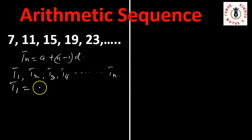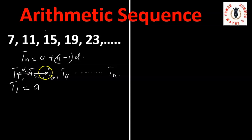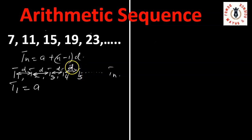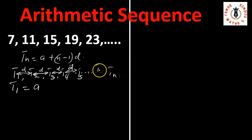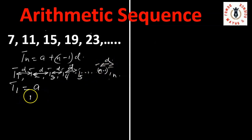For t1 we let our first term be a. The difference between the first and second term we call d. The same difference d exists between t2 and t3, between t3 and t4, and between the fourth and fifth terms as well. This arithmetic sequence or series continues until we reach tn minus one going up to tn, and between tn and tn minus one there is also the difference d.